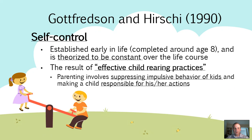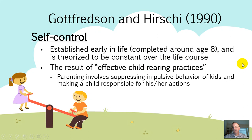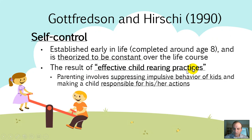Gottfredson and Hirschi talk about self-control at length in their book. Some big points stand out: self-control is theorized to be established early in life, around 8 to 10 years of age. If self-control is not developed by then, you're essentially never going to develop it. It's theorized to be constant over time, which opens the door to some criticism related to the age-crime curve — adolescent-limited and life-course-persistent offenders — which we'll discuss in another video. Essentially, self-control is the result of effective child-rearing practices.